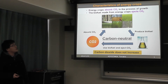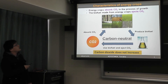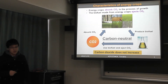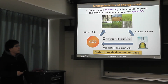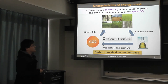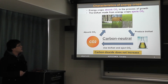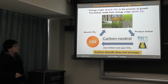I'd like to talk about the characteristics of energy crops. There are two features. Energy crops absorb CO2 in the process of growth, and the bio-fuel made from energy crops ejects CO2 when we use it. So we produce CO2 when using bio-fuel, but energy crops absorb CO2 as they grow. This cycle is called carbon neutral, meaning CO2 does not increase overall.